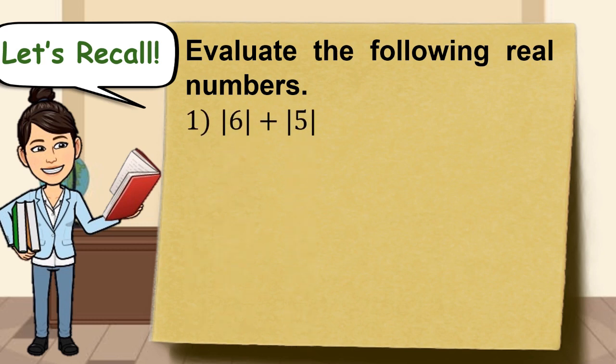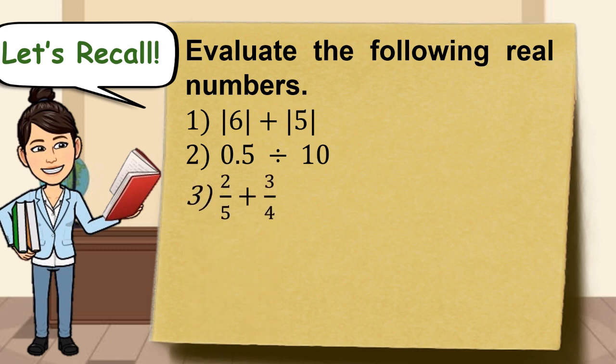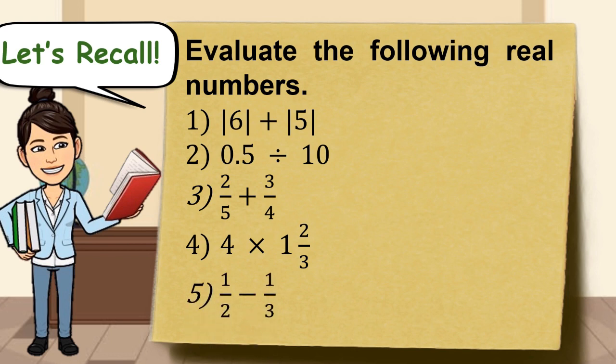Number 1, the absolute value of 6 plus the absolute value of 5. Number 2, 0.5 divided by 10. Number 3, 2 over 5 plus 3 over 4. Number 4, 4 times 1 and 2 thirds. Number 5, 1 half minus 1 thirds.